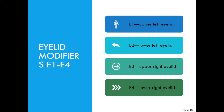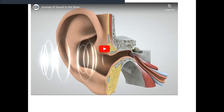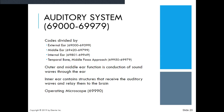Now we're going to go into the auditory system, which is our ears. The auditory system codes are divided by external ear, middle ear, internal ear, temporal bone, and middle fossa approach. The outer and middle ear function as conduction of sound waves through the ear. The inner ear contains structures that receive the auditory waves and relay them to the brain.